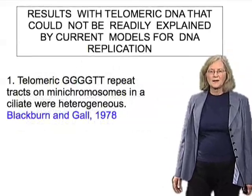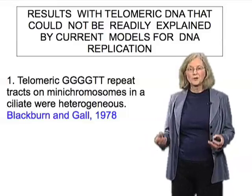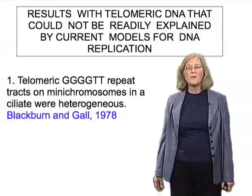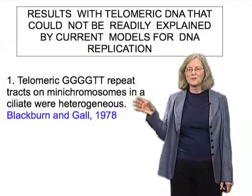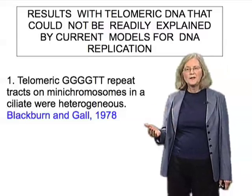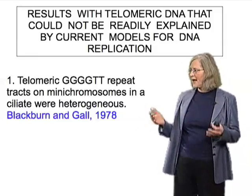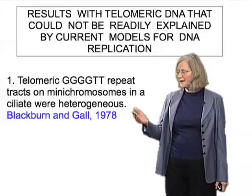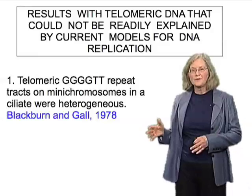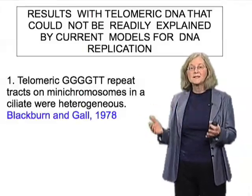The first observation was that in the ciliated protozoan Tetrahymena, which has a lot of very small mini-chromosomes amenable to molecular analyses of telomeric DNA, the telomeric repeat sequences — G4T2 repeats — were heterogeneous in their number in different molecules in a population of otherwise homogeneous cells. Some copies of the mini-chromosome would have 20 repeats on the end, some would have 50, some 49, some 82, some 53 — all different numbers in a sort of normal distribution.